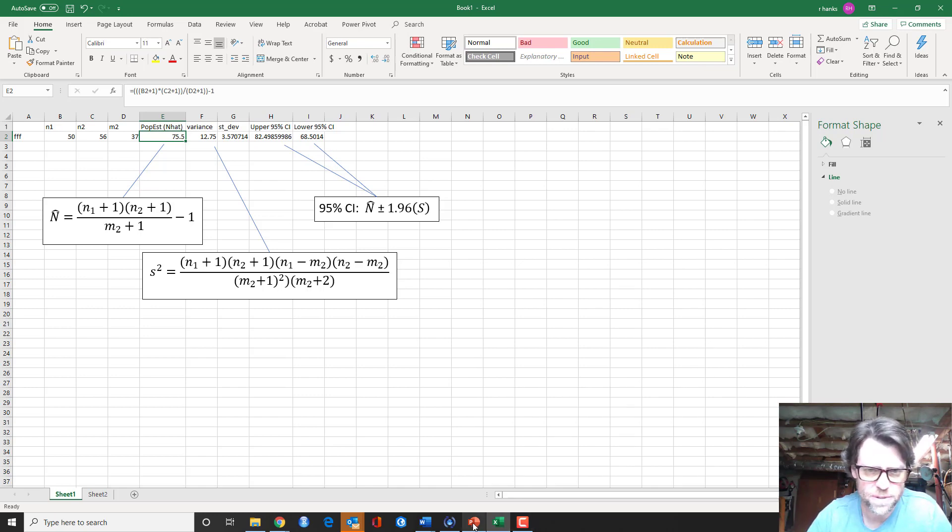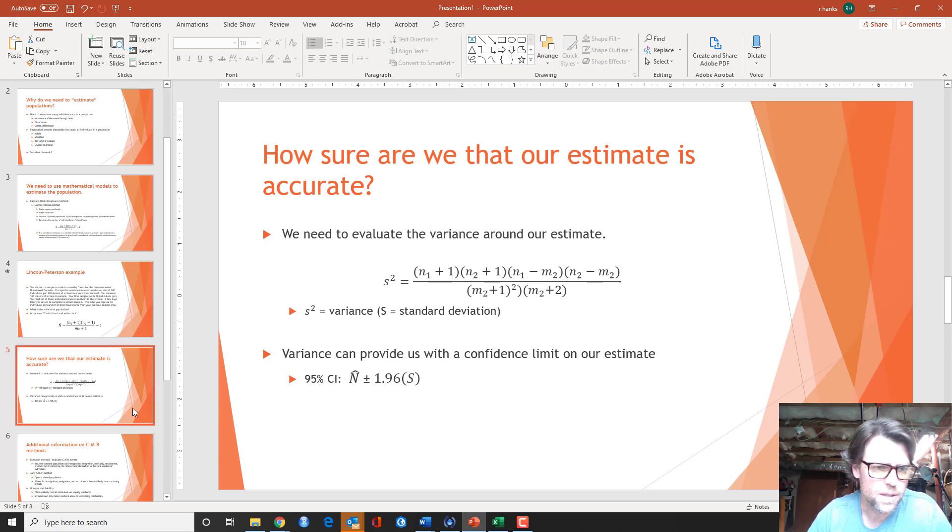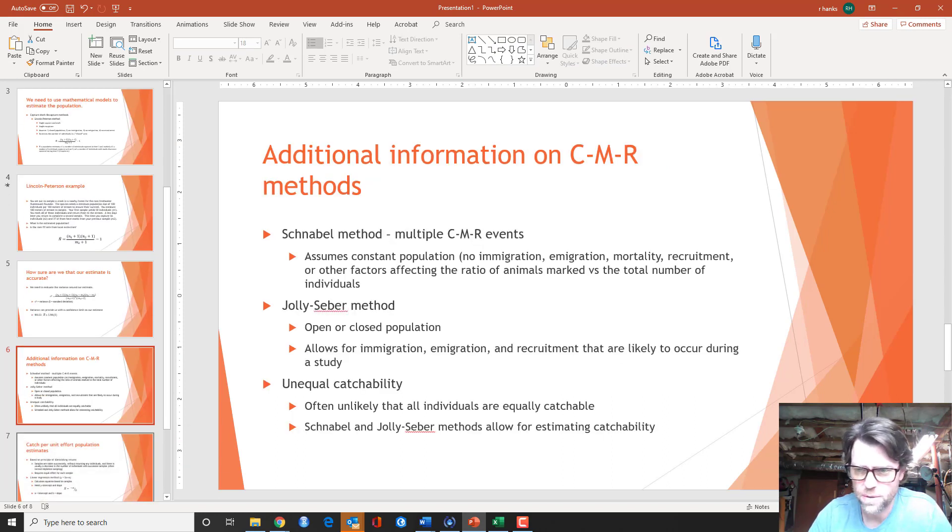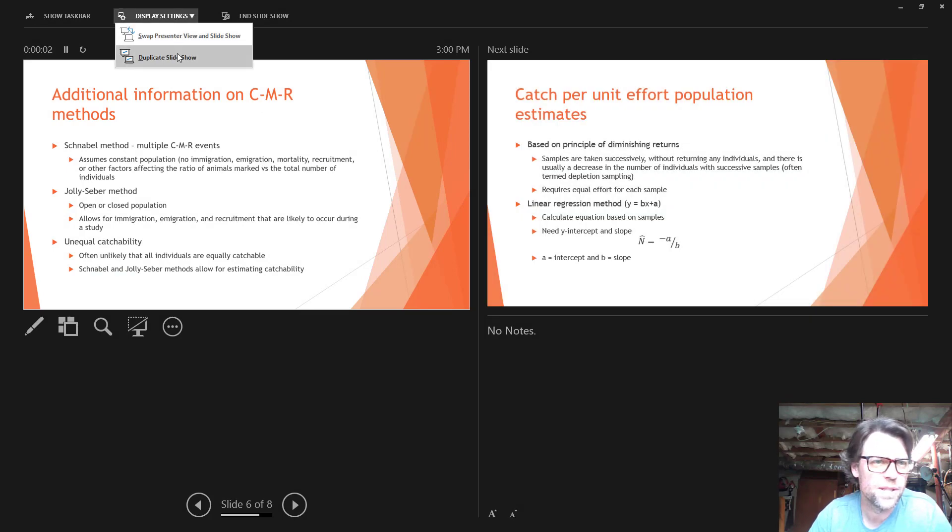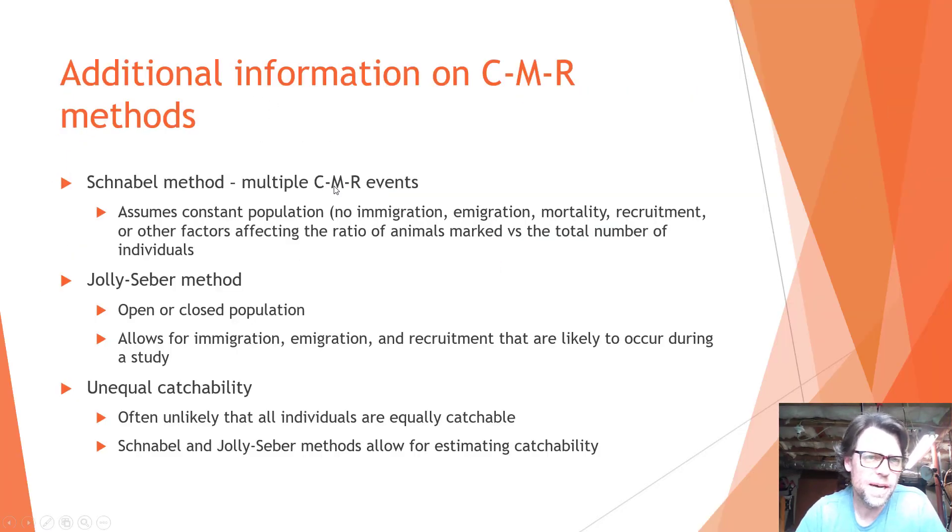All right, let's take a look at some other examples. So now let's imagine that there are some other methods that you can use capture, mark, recapture methods. There's one called the Schnabel method, and this is where you have multiple capture, mark, recapture events. So you go to the stream multiple times and capture, mark, recapture the fish. And this assumes, again, a constant population. In other words, no immigration, no emigration, no mortality, no recruitment, or any other factors that might affect the ratio of animals that you've marked versus the total number of individuals that are in the stream section.